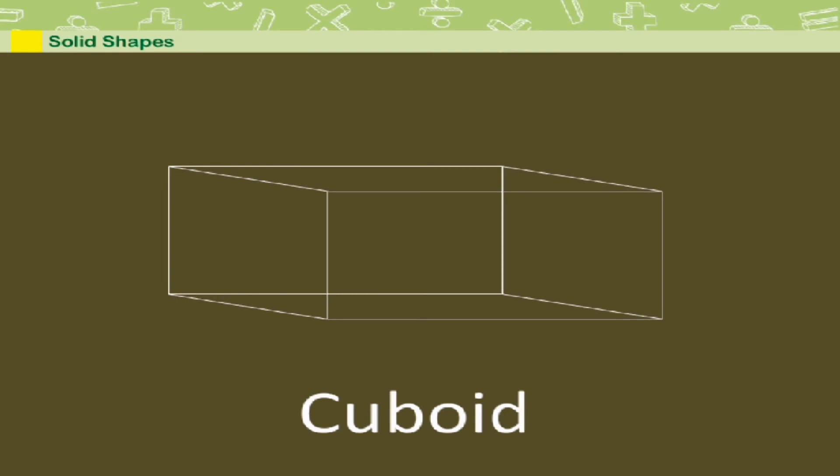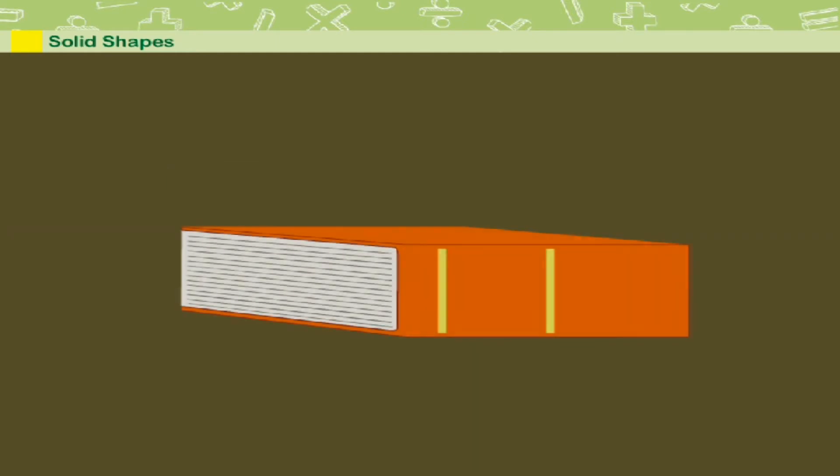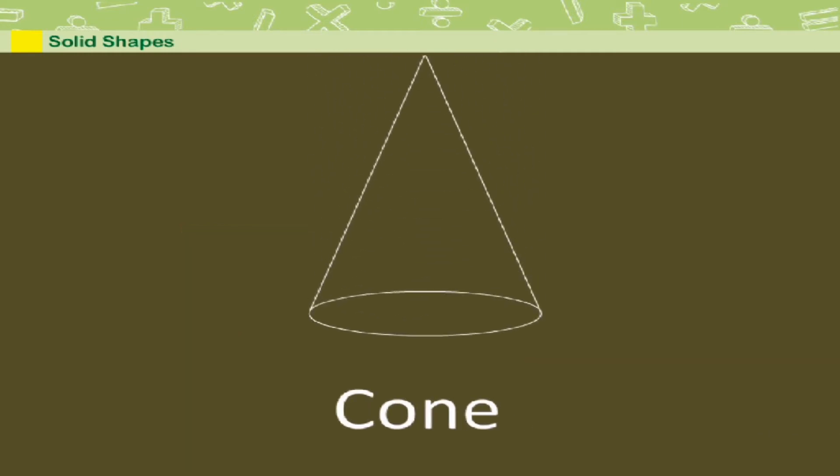A cuboid has six flat surfaces. The opposite surfaces are equal. See this book. It is a cuboid.